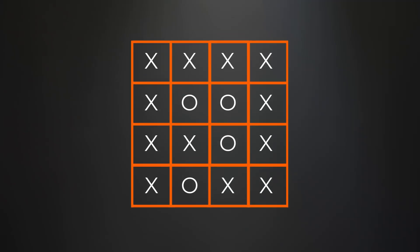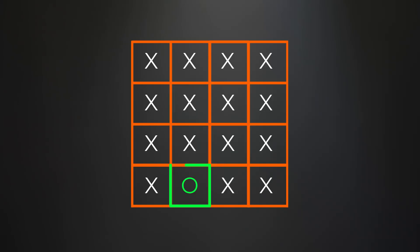For this problem we are given a matrix containing only the characters X and O, and we have to flip all O's into X's which are four-directionally surrounded by X's. Looking at the example, a section of O's would be flipped since it is entirely surrounded by X's horizontally and vertically. A single O touching the edge is left alone since it is not fully surrounded.